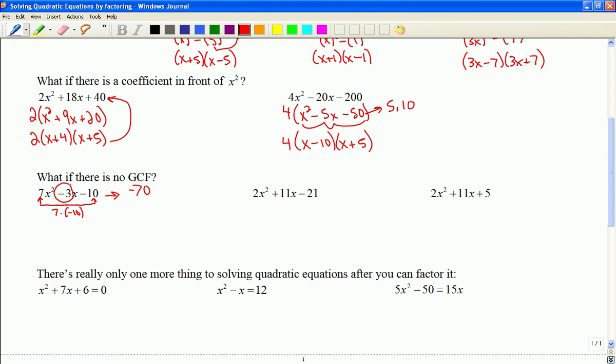And then from that multiplication, which pair adds up to negative 3? So for example, we could have 7 and negative 10. And if I add them together, yep, I end up with negative 3. So this is the pair that I'm going to be using when I reconstruct it.